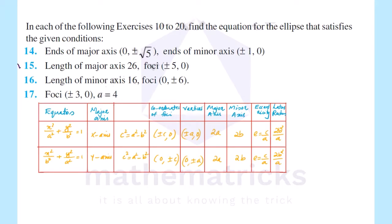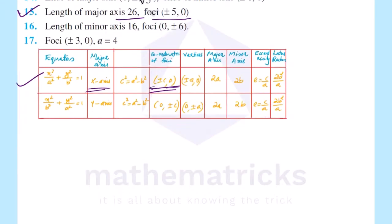Next is the 15th question. Length of major axis is 26, foci at (±5, 0). The foci coordinates (±c, 0) indicate the major axis is along the x-axis. So the equation form is x²/a² + y²/b² = 1.